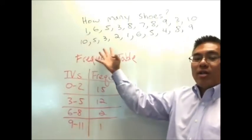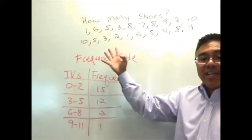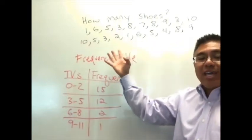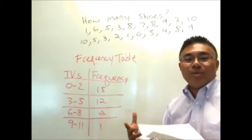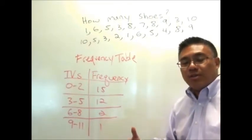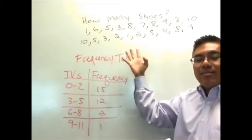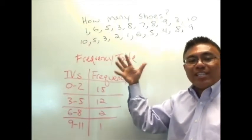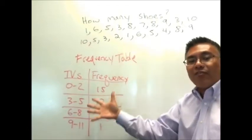But if you take a look at just the raw numbers, it's kind of hard to gauge that, right? It's kind of hard to gauge if a lot of people own a lot of shoes. Very few people own very little shoes. So it's easier to make those types of conclusions or to get a sense for the characteristic of the data by first creating the table.